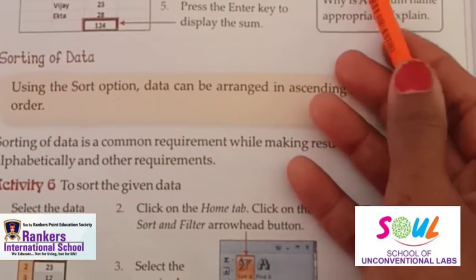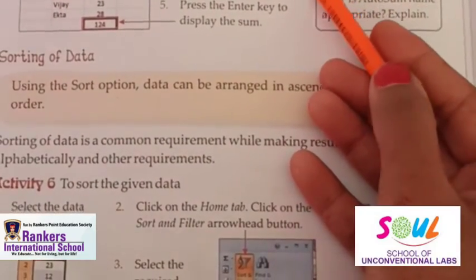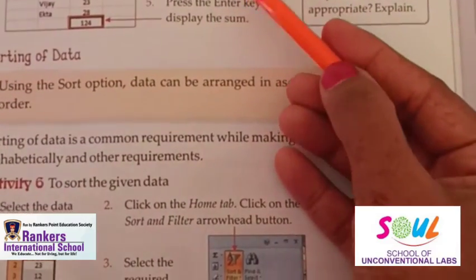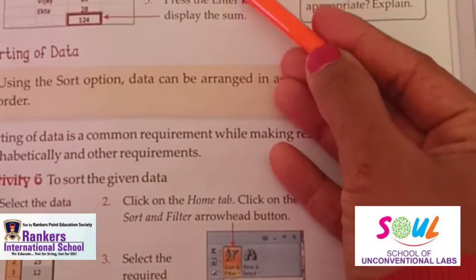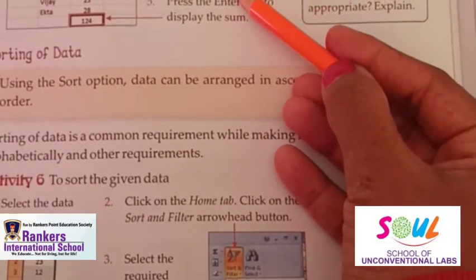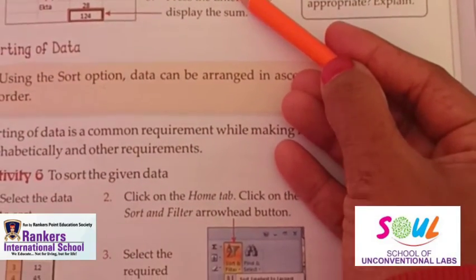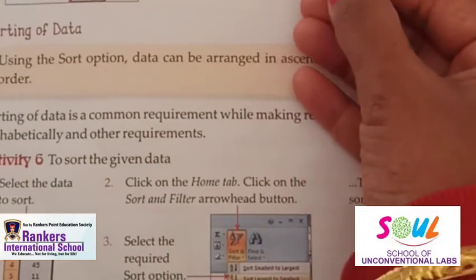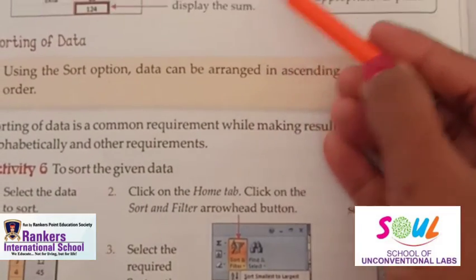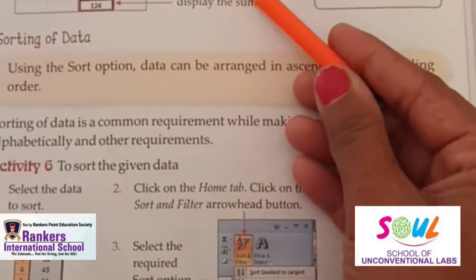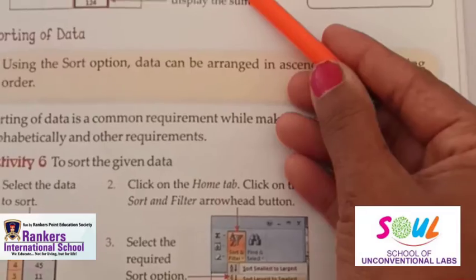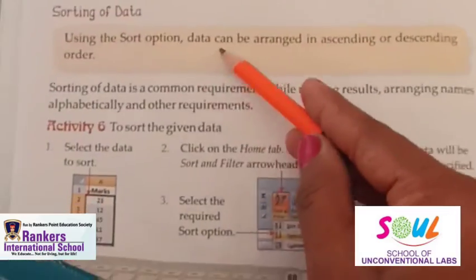When you click AutoSum, an equal sign and the sum formula with the selected range will appear automatically. The formula will be applied and the sum of the range will be calculated.